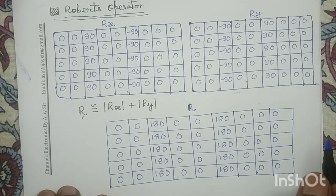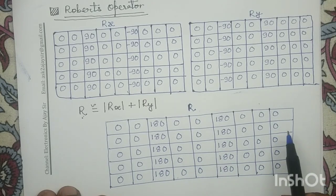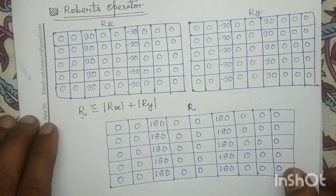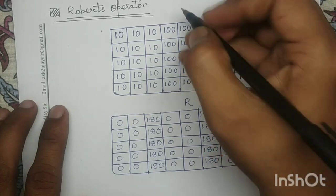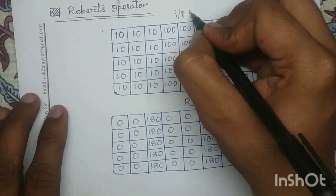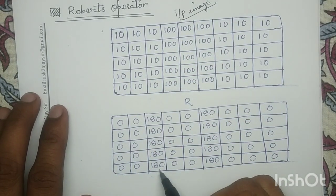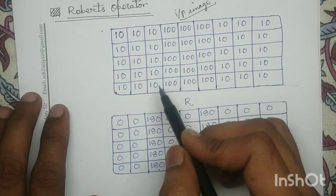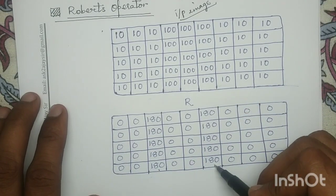For this given example, we have computed the magnitude of the Roberts operator. Our next step is to compare this magnitude matrix with the given input image. Clearly, you can see that at the location of the edges, you get a much higher response compared to the surrounding pixels. At each edge location, you get a much higher response compared to the surrounding.